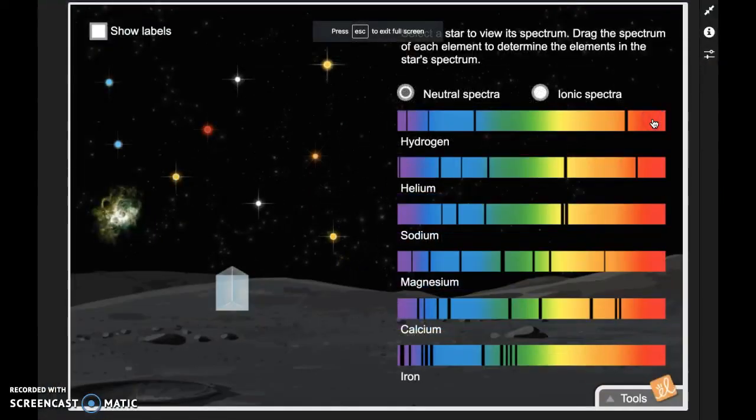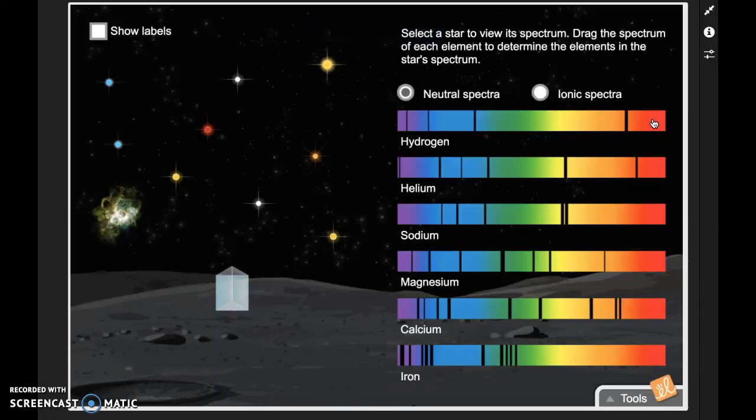All right, so we started looking at the electromagnetic spectrum yesterday. And as I mentioned, we've got our red light, our orange light, yellow, green, blue, and they go all the way through violet.